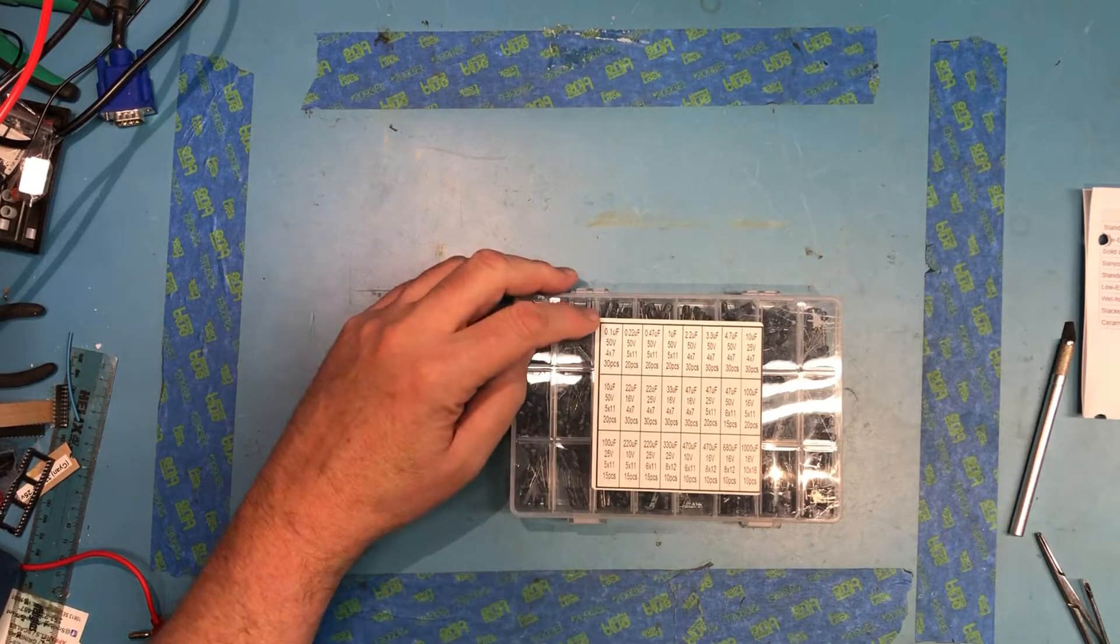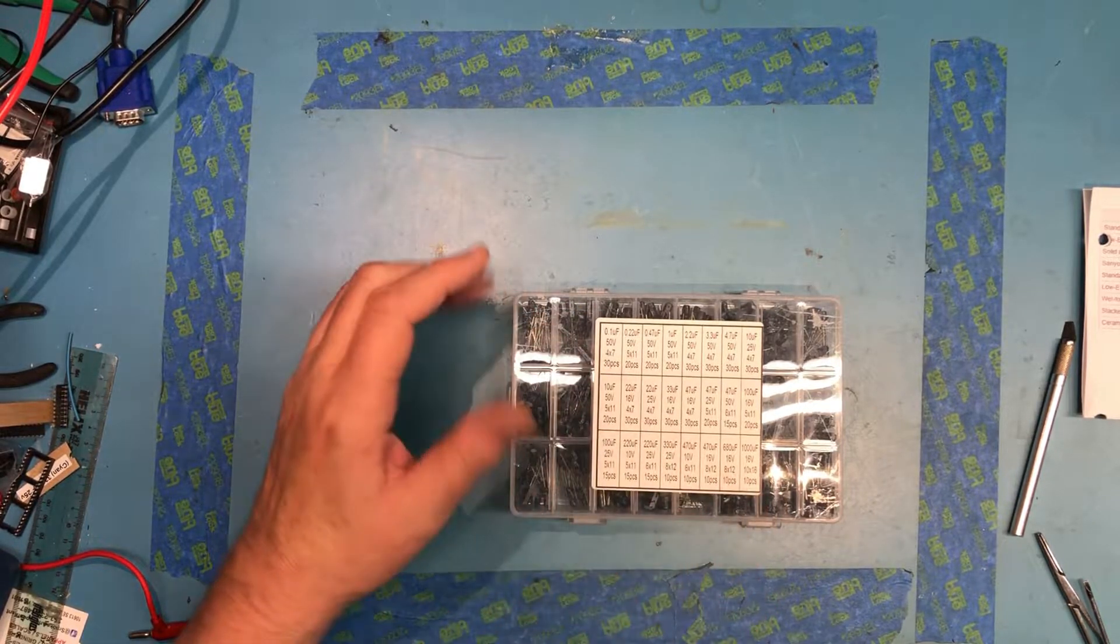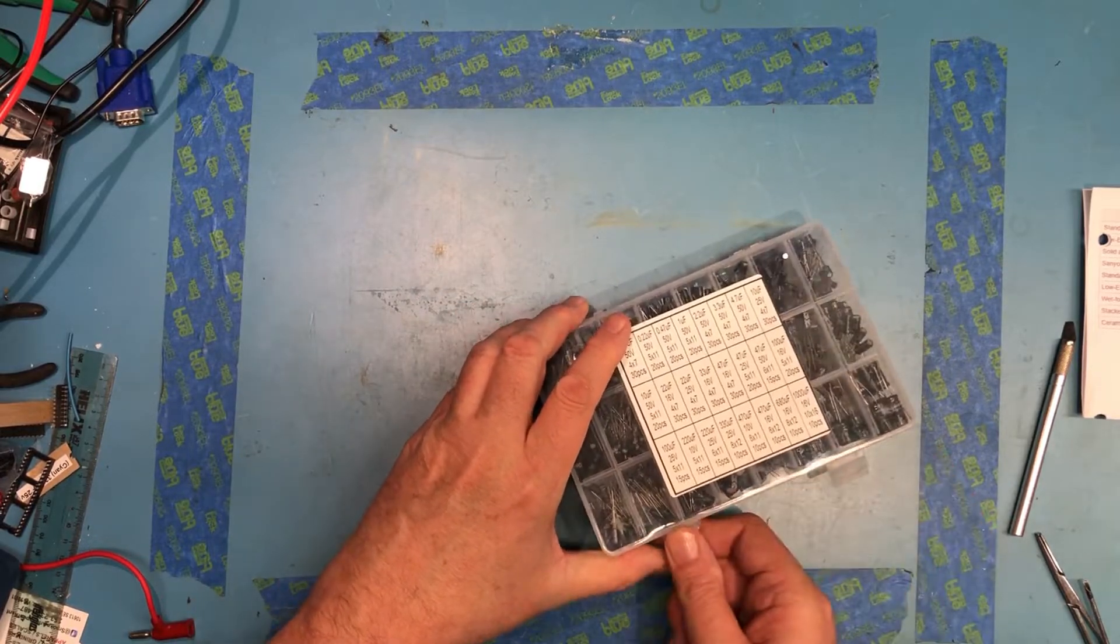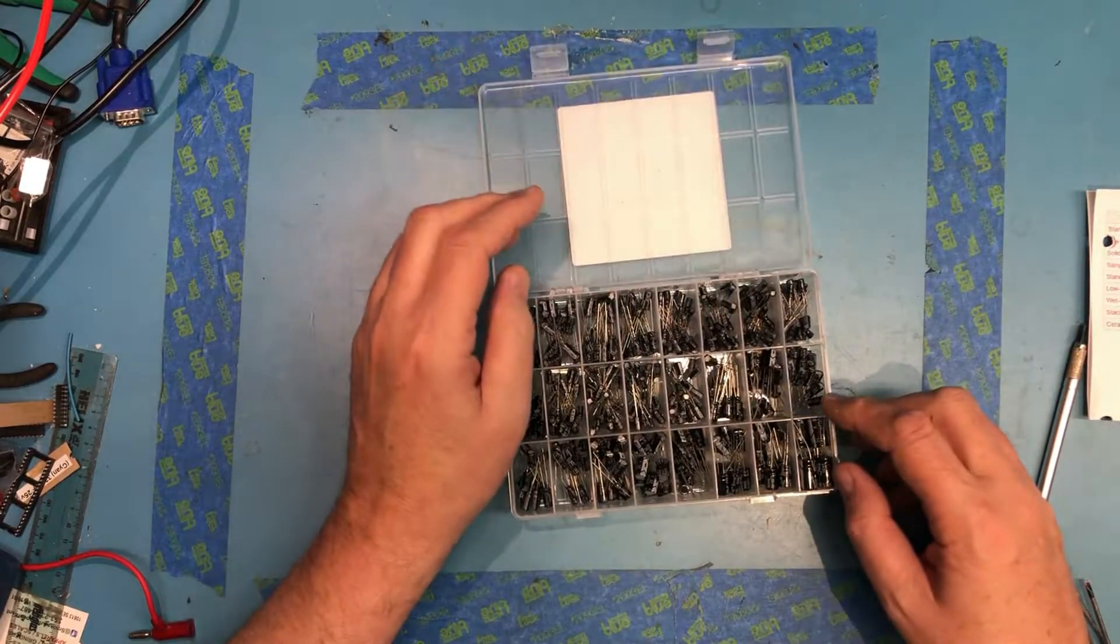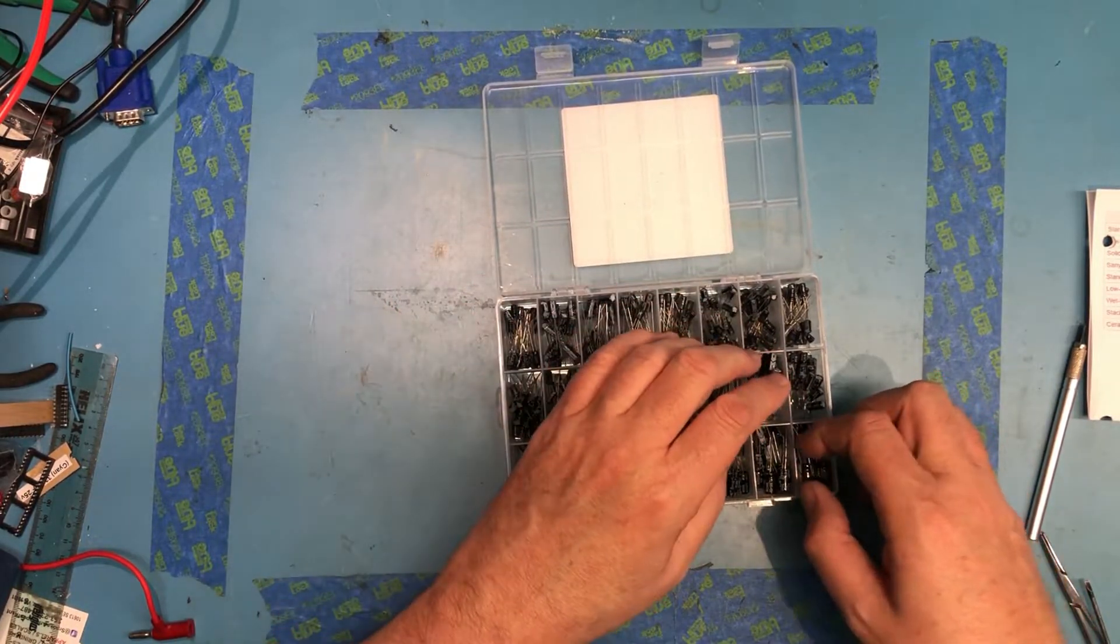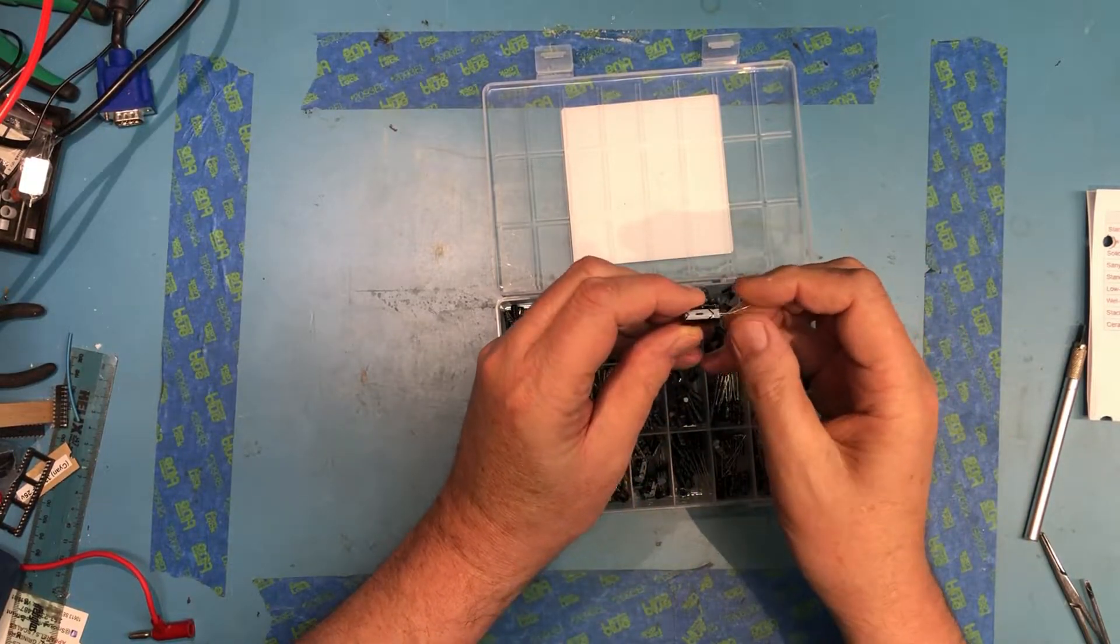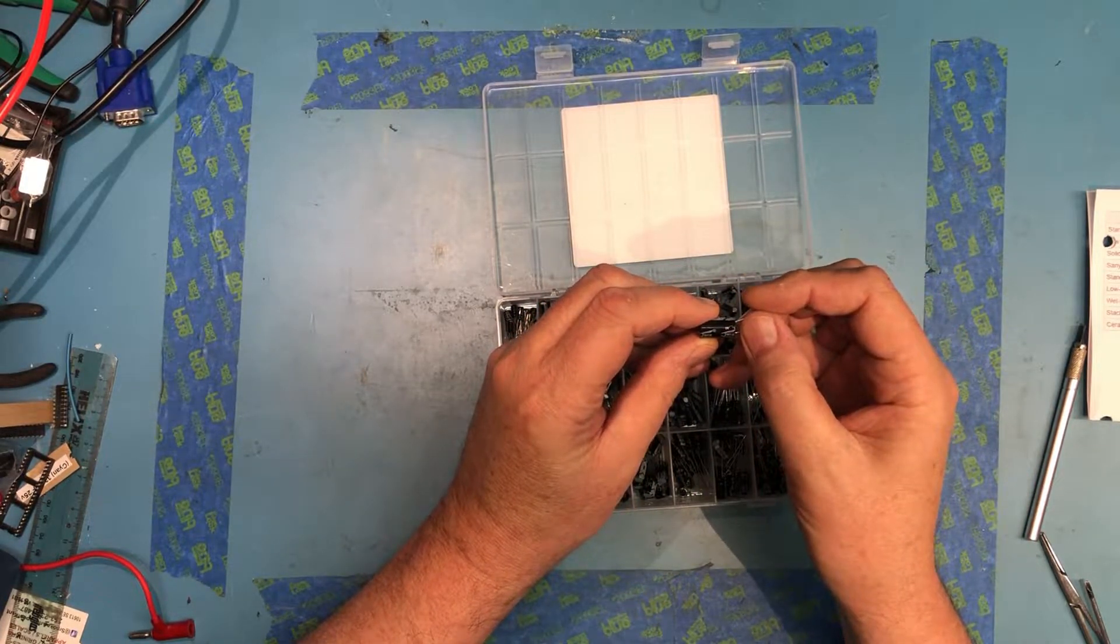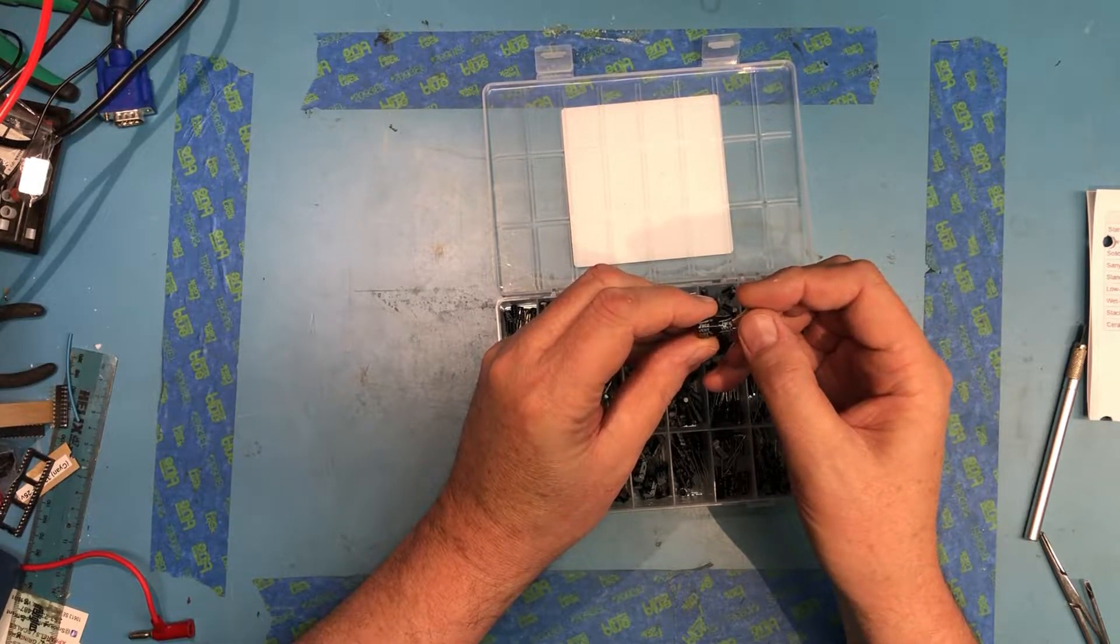So an assortment of 0.01 50 volt all the way up to 1,000 microfarad, 16 volt. Get the little box open. JWCO, I think.